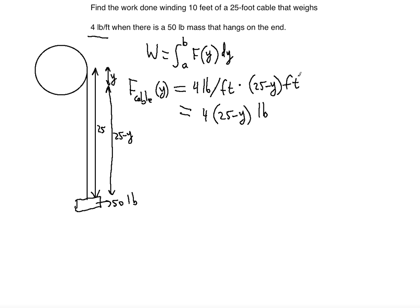Note how feet cancel out, leaving pounds — exactly what force should be. The force function for the mass as a function of Y will simply be 50 pounds. This is the weight of the object attached at the very end of the rope, and it weighs the same no matter how far you pull it up. You will always need the same force to counter its weight, so the force function is constant at 50 pounds.